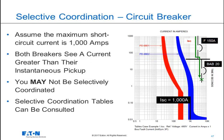Should the fault current that passes through these two devices be 1,000 amps, we recognize that this current is greater than the instantaneous pickup of both circuit breakers. Based on the time-current characteristic curves alone, you may or may not be selectively coordinated. With TCC information alone, we would have to assume we do not selectively coordinate. This is where the value of the selective coordination tables are realized.